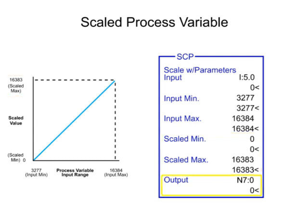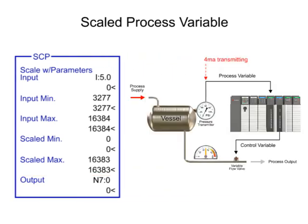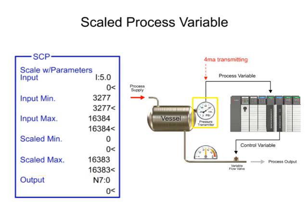The SCP output parameter is the integer file address where the scaled output is stored and then used by the PID instruction as the process variable. For example, when the minimum pressure of 0 PSI is measured, a scaled value of 0 is transferred to the SCP output, and when 100 PSI is measured, a scaled value of 16,383 is transferred to the SCP output.